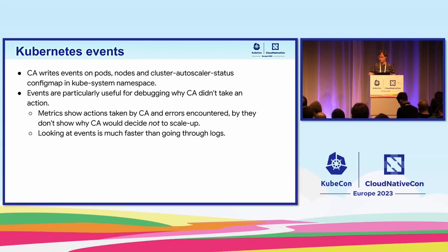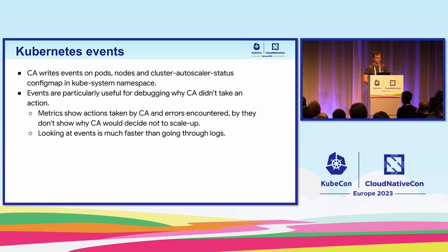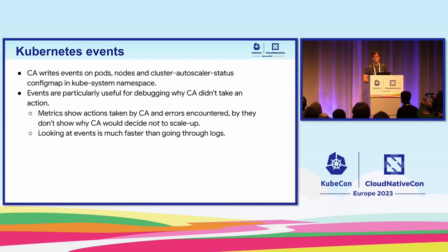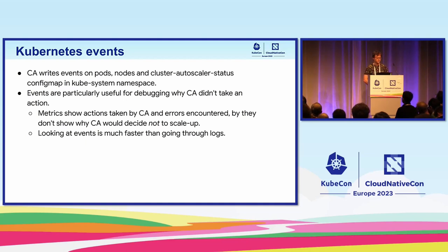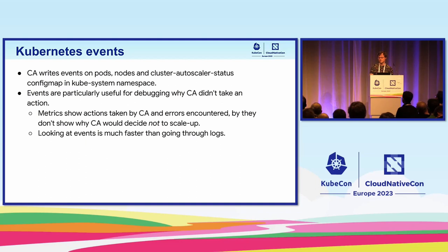Another thing I wanted to mention is Kubernetes events. Cluster Autoscaler writes Kubernetes events on pods, nodes, and the Cluster Autoscaler status ConfigMap in kube-system. The ConfigMap basically gives you an event log of all actions taken by the Autoscaler. The pod events can tell you why Cluster Autoscaler is not scaling up even if a certain pod is pending, or confirm that Autoscaler has triggered a scale-up specifically because that pod was pending. It's quite useful for debugging, especially for problems where Cluster Autoscaler is not scaling up when you think it should.